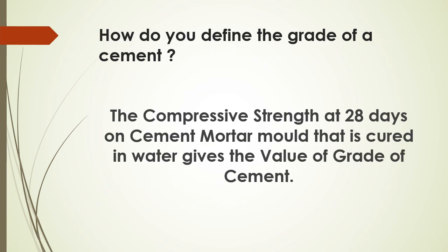How do we define the grade of cement? The compressive strength at 28 days on cement mortar mould cured in water gives the grade value. If the compressive strength is 53 N/mm², it is called 53 grade cement. If it is 43 N/mm², it is called 43 grade cement.